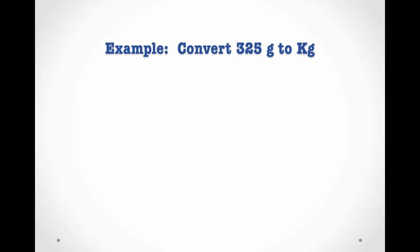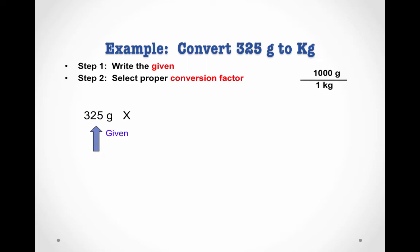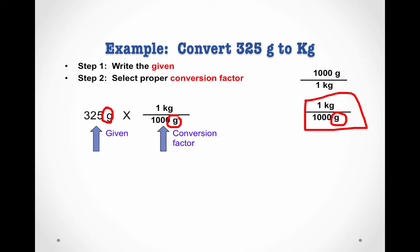I'm going to convert 325 grams to kilograms. So first I write the given, which in this case is the number I'm trying to convert, 325 grams. Then I select the proper conversion factor. So I have two choices here. I know my conversion factor needs to include grams and kilograms because I'm trying to convert from grams to kilograms. But I could write it this way or I could write it this way with kilograms on top. How do I know which one to choose? I want to choose the one that's going to allow my units to cancel. So if I choose the one with grams in the denominator, notice that our grams will cancel with our grams when we do the multiplication. So I'm going to choose this version of the conversion factor. Then I'm going to cancel my units and solve. So when I multiply, my grams will cancel and I'll get 0.325 kilograms.